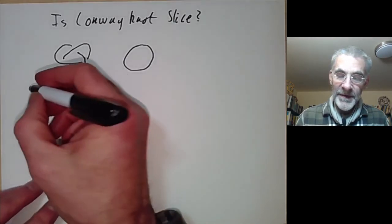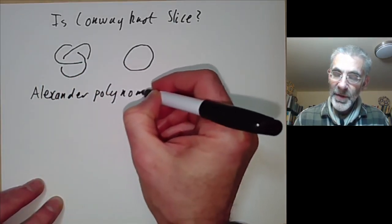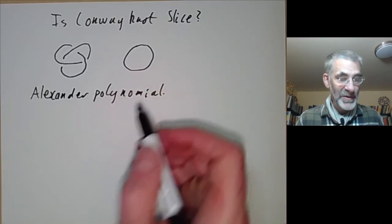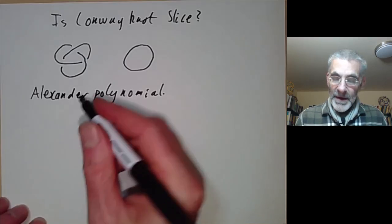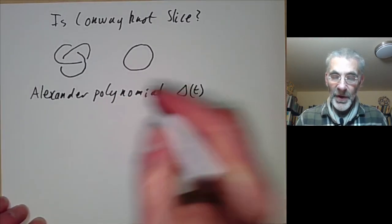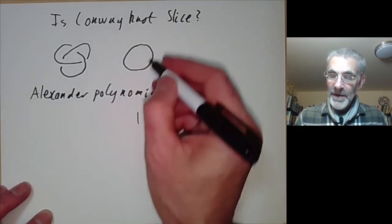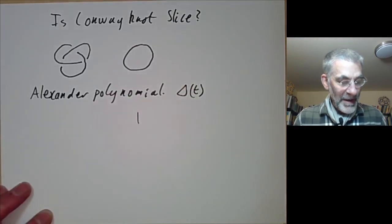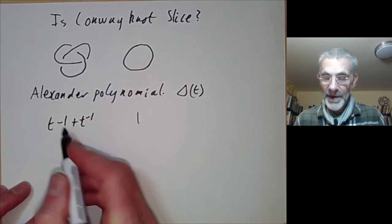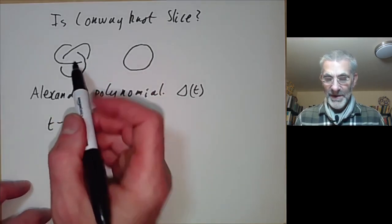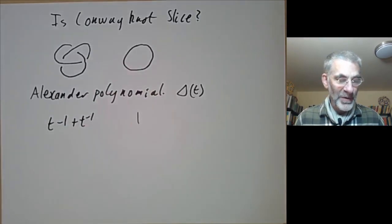One way to show two knots are different is to look at the Alexander Polynomial. The Alexander Polynomial is a certain polynomial — actually it's really a Laurent Polynomial — usually denoted by delta of t, depending on the knot. For instance, the Alexander Polynomial of the unknot is just 1, and the Alexander Polynomial of the Trefoil knot is t minus 1 plus t to the minus 1. These are different polynomials, which shows that these are different knots.